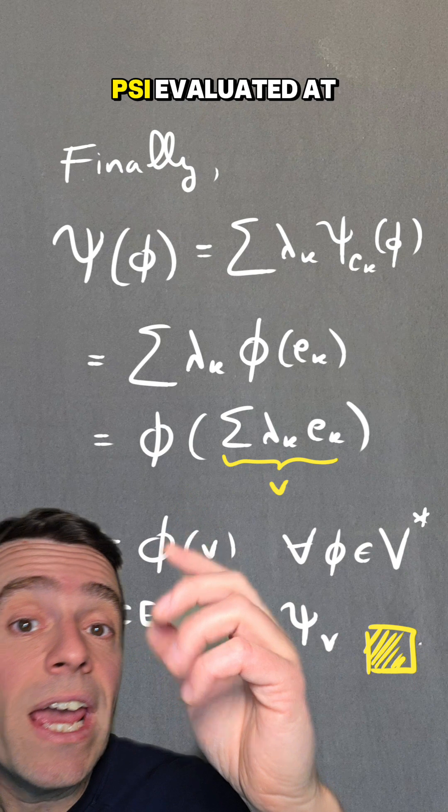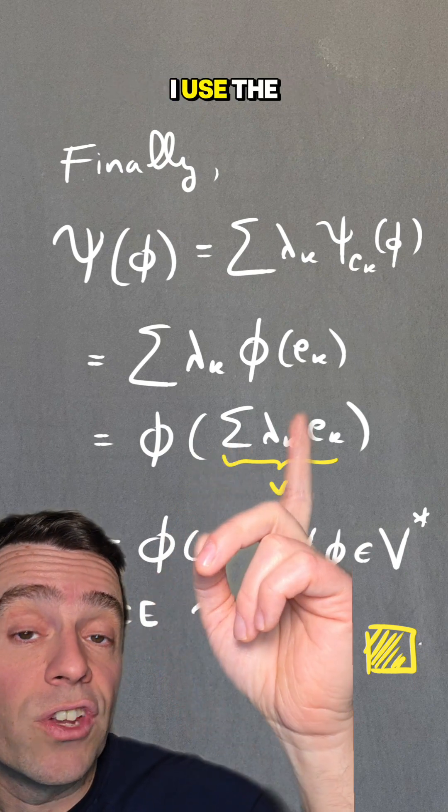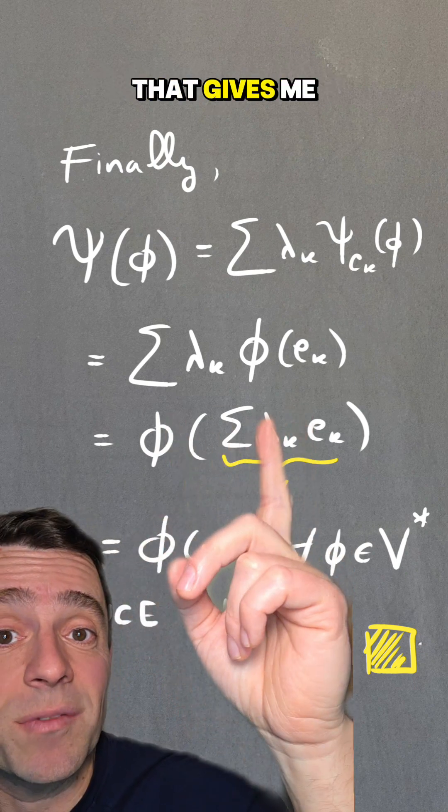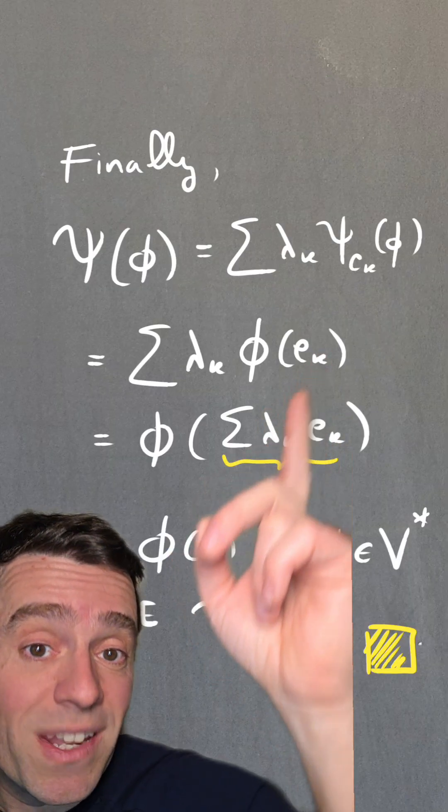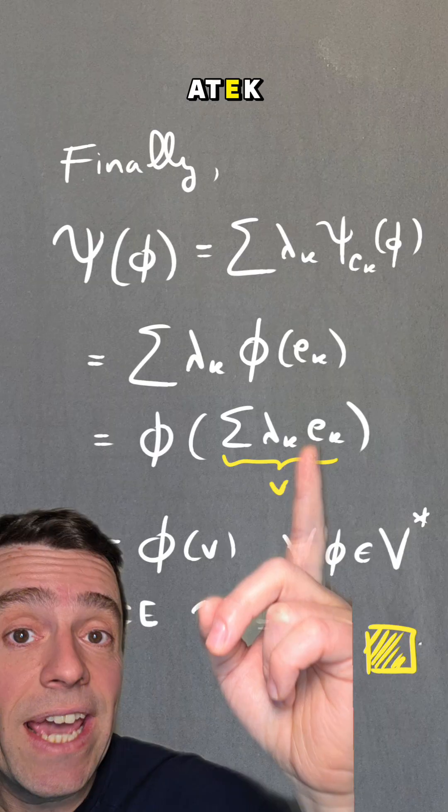Then, what is ψ evaluated at φ? I use the linear combination of the ψ_e_k's that gives me ψ, evaluate at φ, and ψ_e_k evaluated at φ is φ evaluated at e_k.